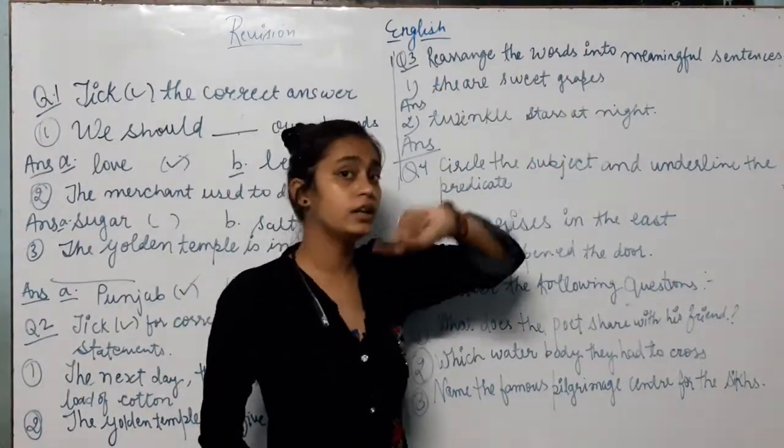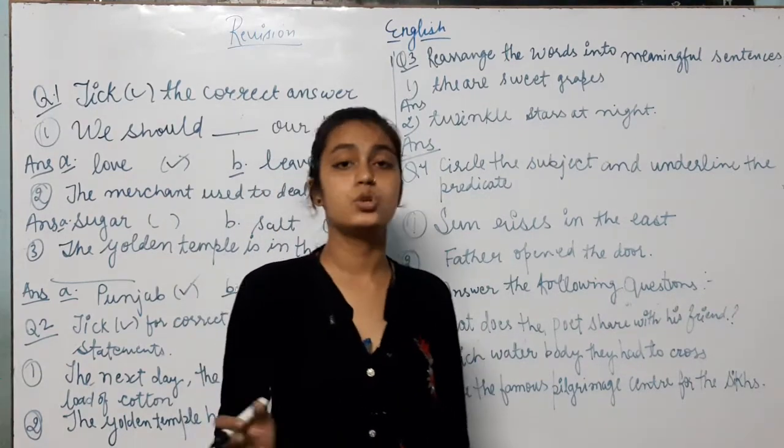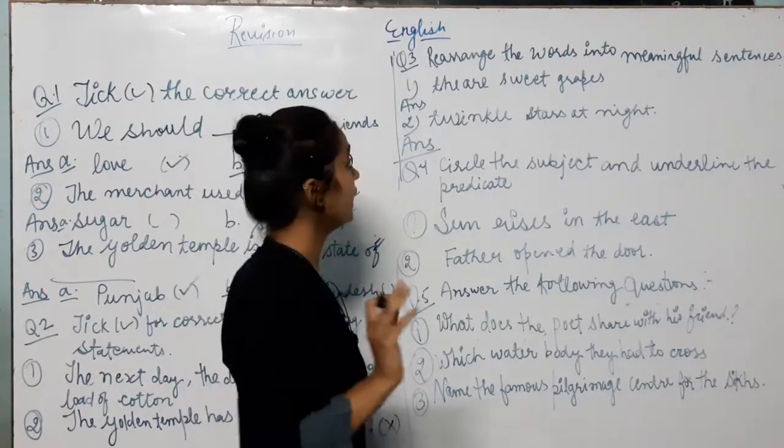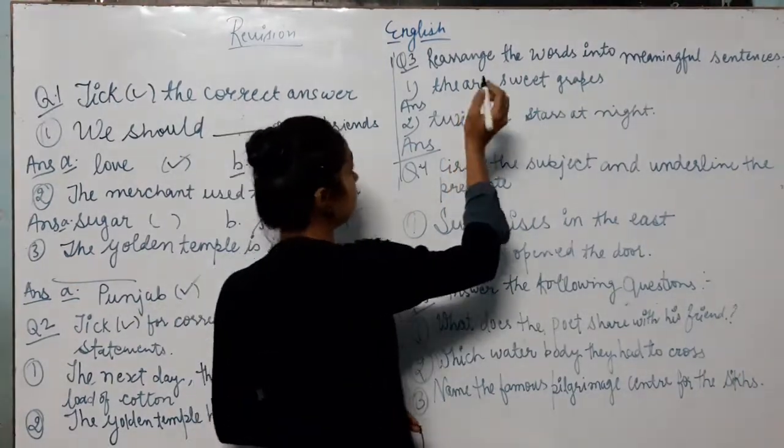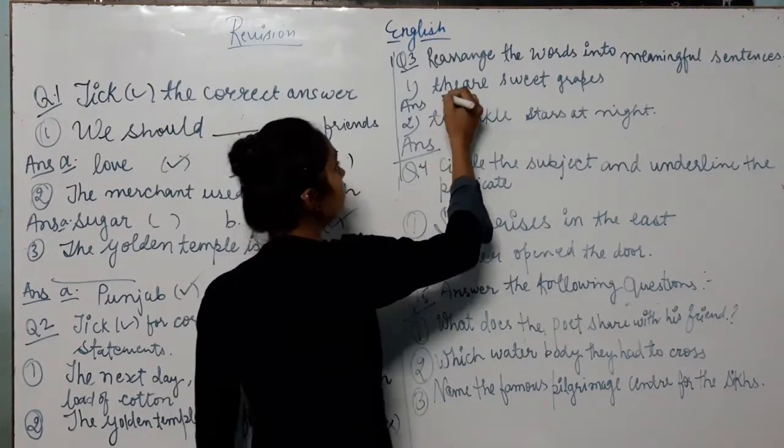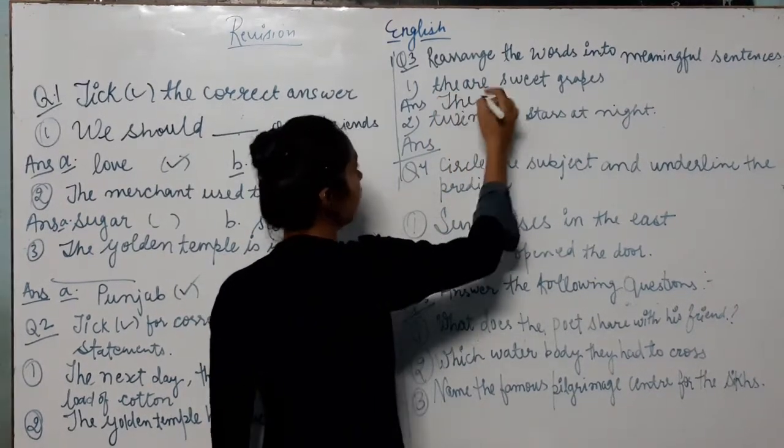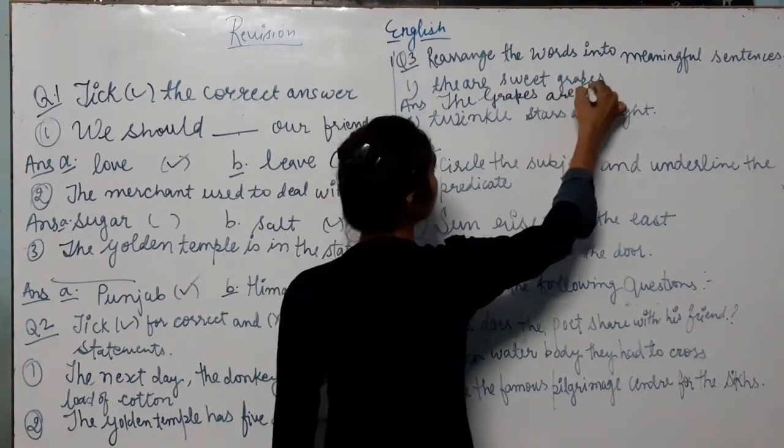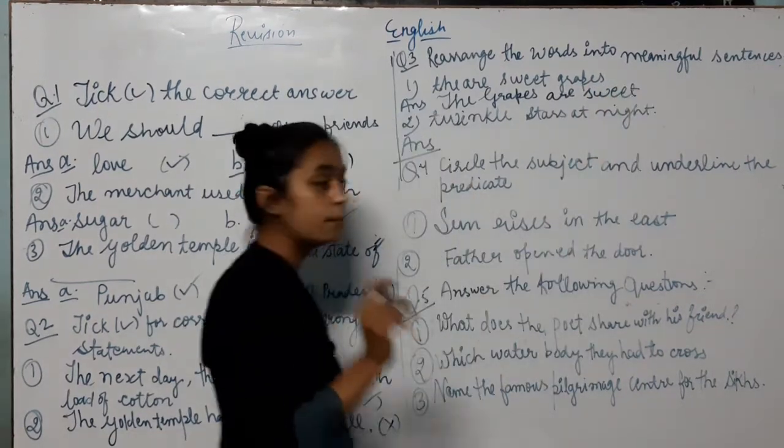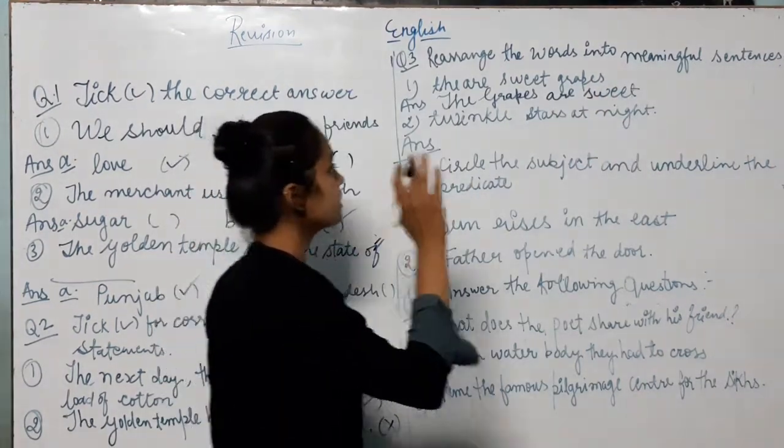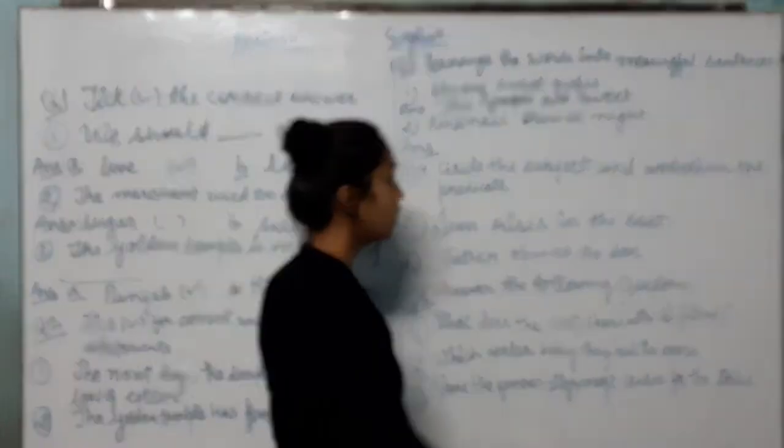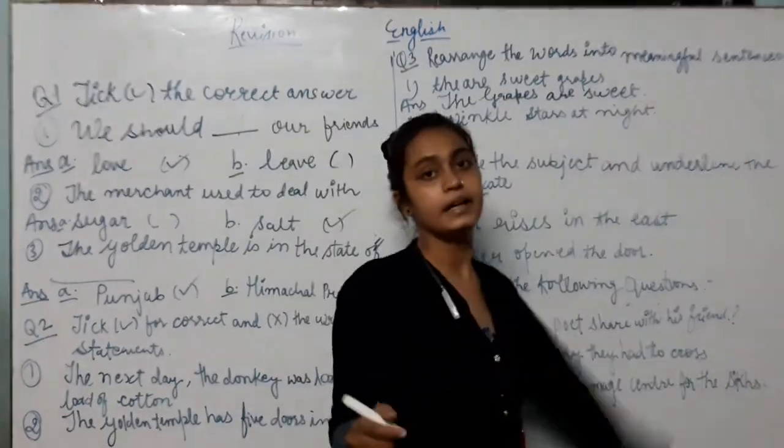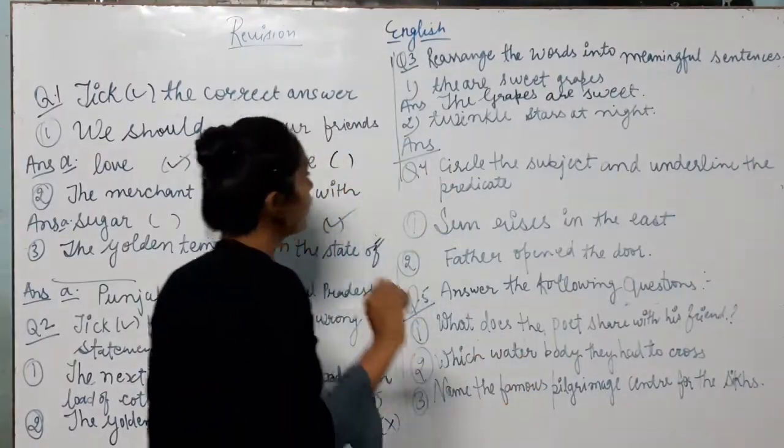So they are the words, but it not makes sense. So it is words: the are sweet grapes. So arrange it. Grapes. The grapes. What we will make? The grapes. First letter is capital in the sentence. The grapes are sweet. This is complete sense. So it is called sentence. And we put full stop. In the sentence, there is mandatory that first letter is capital and end sentence with full stop.